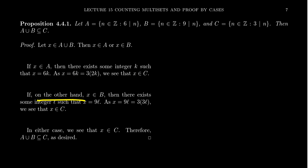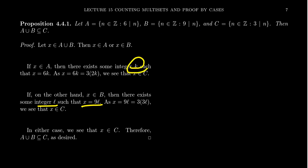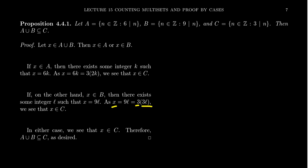On the other hand — indicating to the reader that we're considering a different case — if X belongs to B, then X is a multiple of 9. Therefore there exists an integer L such that X equals 9L. We can factor 9 as 3 times 3, so X equals 3 times 3L. Since 3L is an integer, this shows X is equal to 3 times an integer, meaning 3 divides X, so X belongs to C as well. In either case, we ended up with X belonging to C, which shows that A union B is a subset of C.